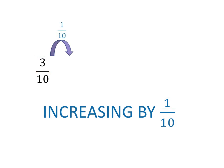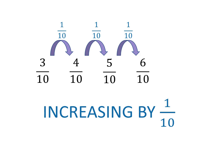So 3 over 10 plus 1 over 10 is 4 over 10. 4 over 10 plus 1 over 10 is 5 over 10. 5 over 10 plus 1 over 10 is 6 over 10. And 6 over 10 plus 1 over 10 is 7 over 10.